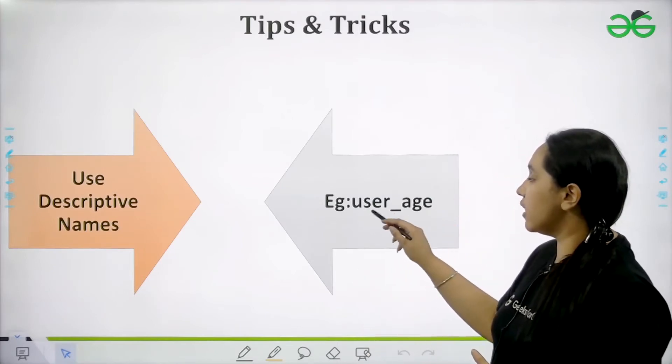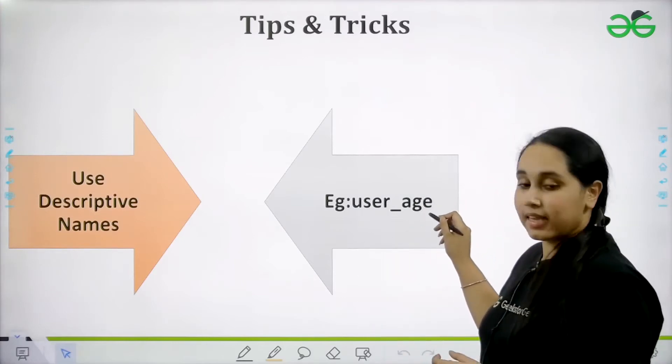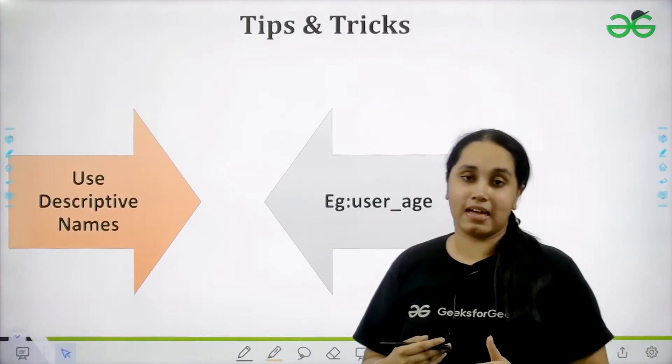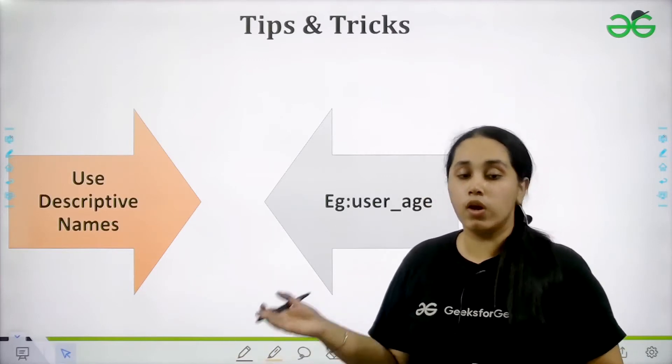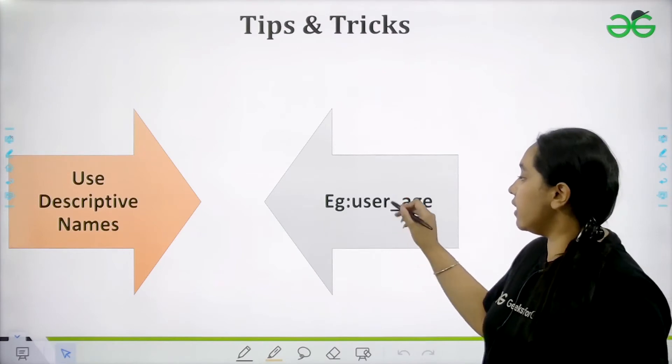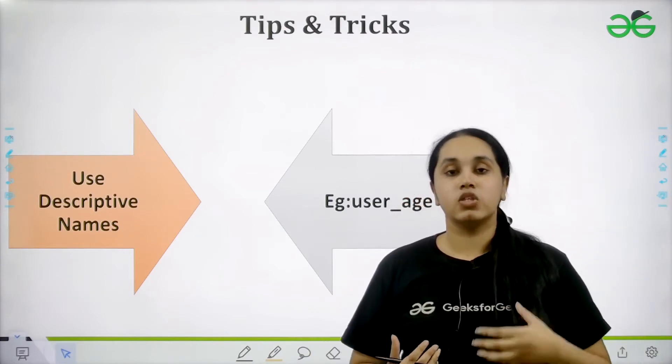For example, if you are writing user age. If you want user age, don't write only age. You can use user_age. Maybe you are adding another age, like employee age. So you have to specify user_age, a descriptive name, so that you can easily run the queries.